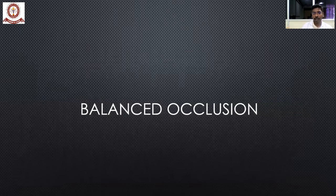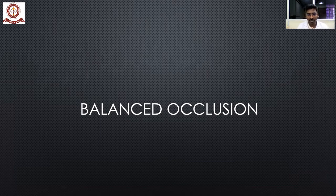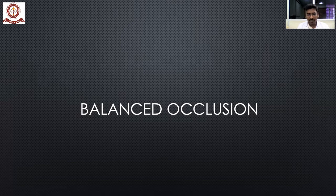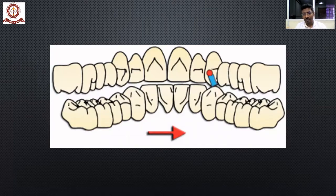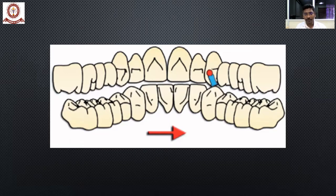Next we'll look at balanced occlusion — a concept that exists only in complete dentures. Please remember: balanced occlusion does not exist in natural dentition; it is only applied to complete denture occlusion. Examiners in viva will commonly ask this. To illustrate: in canine guided occlusion for a complete denture, when the patient chews on the right side and only the right canines contact, a leverage force is created and the denture on the left side comes down.